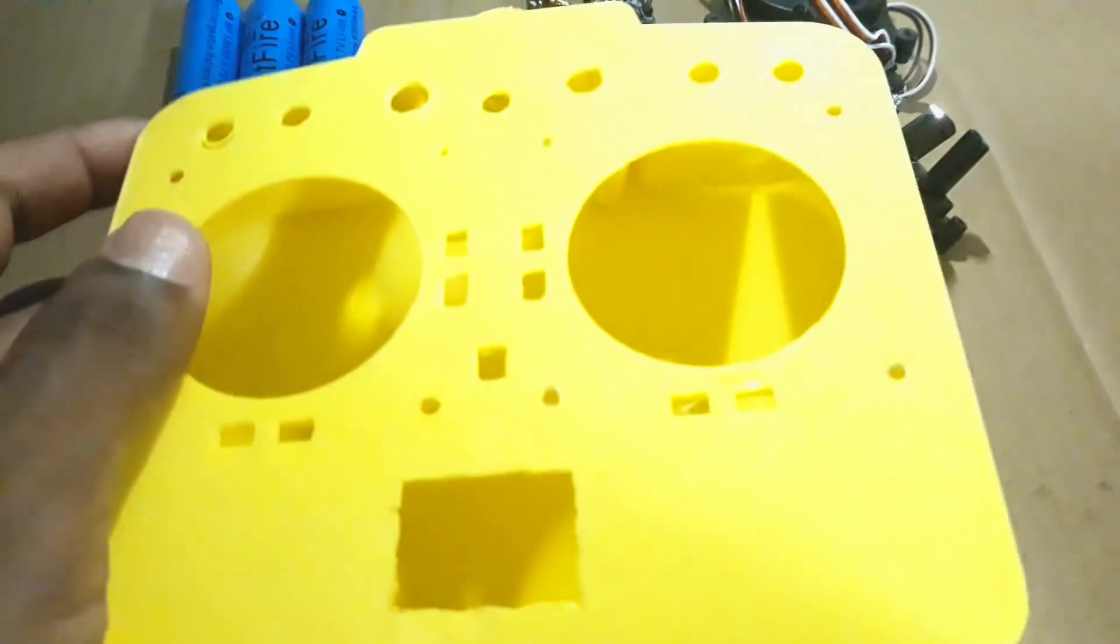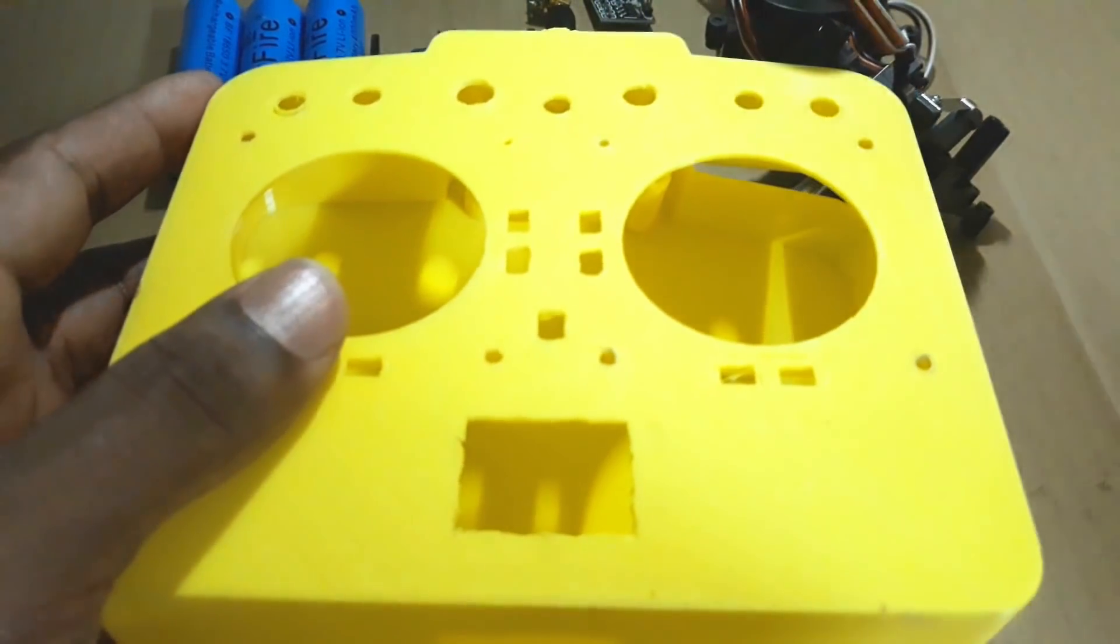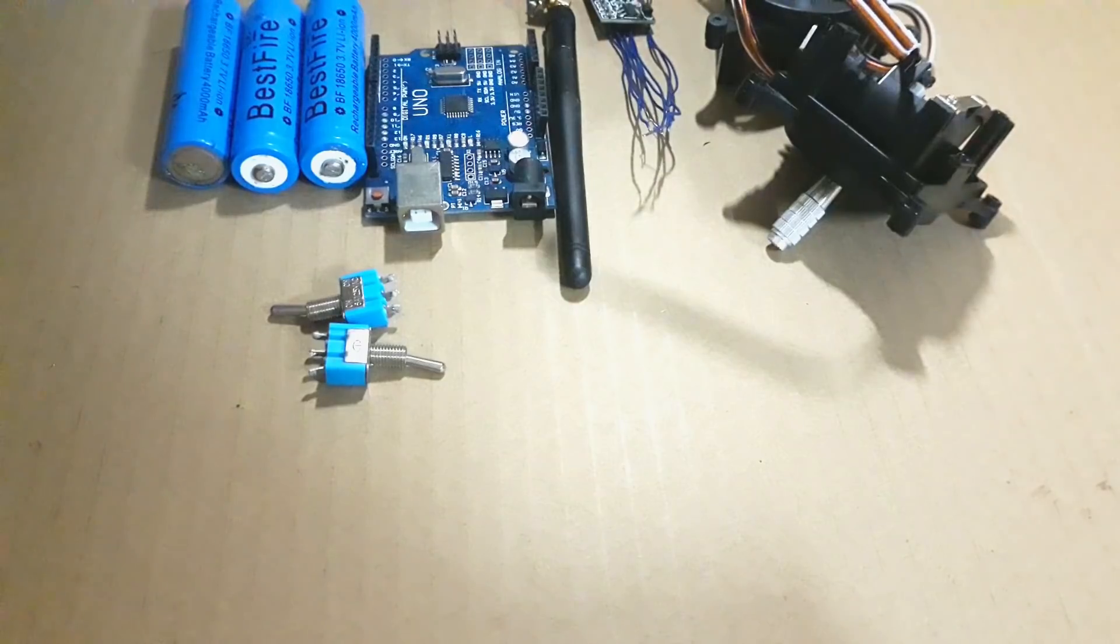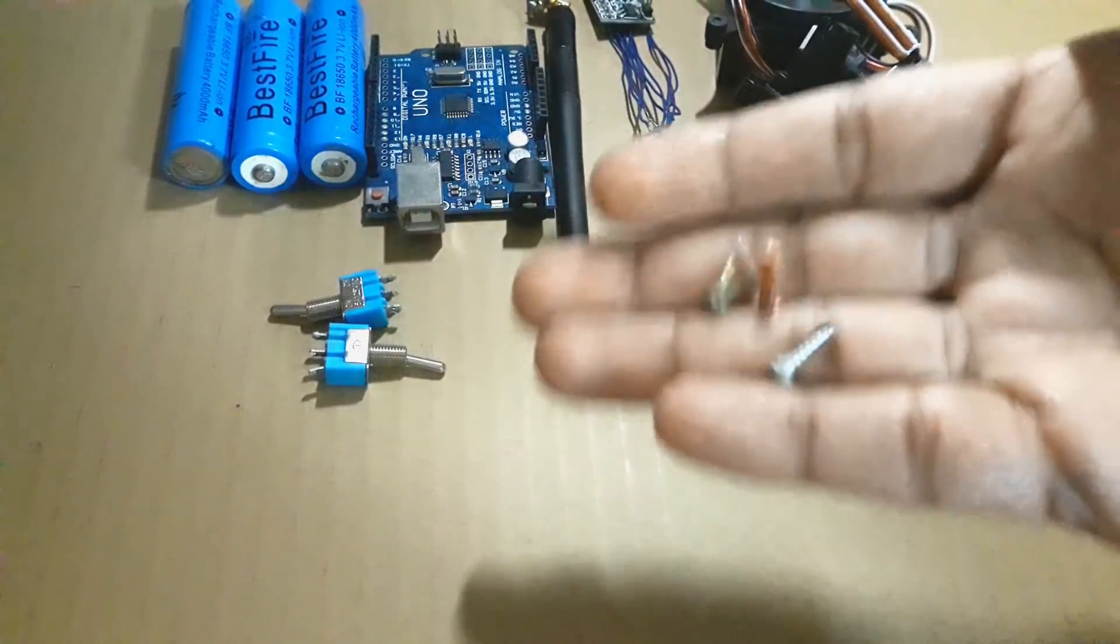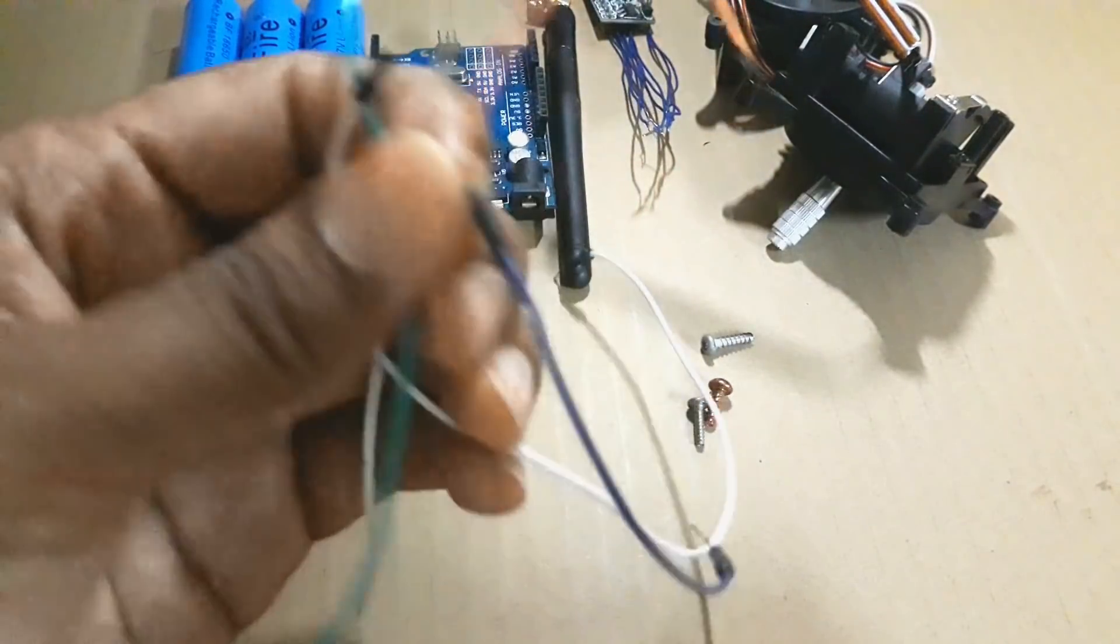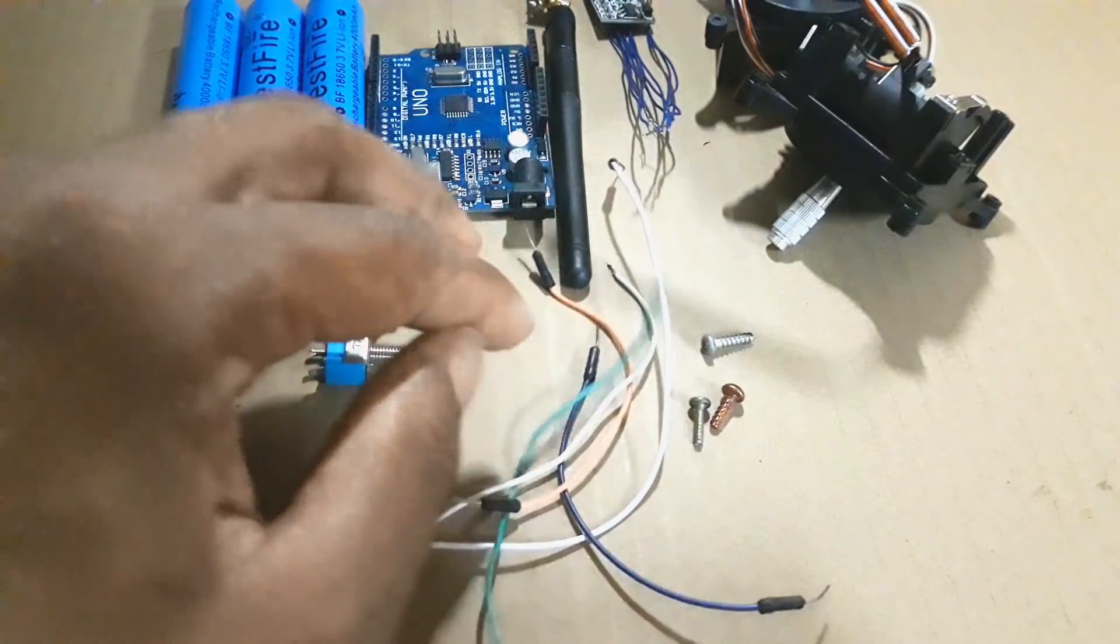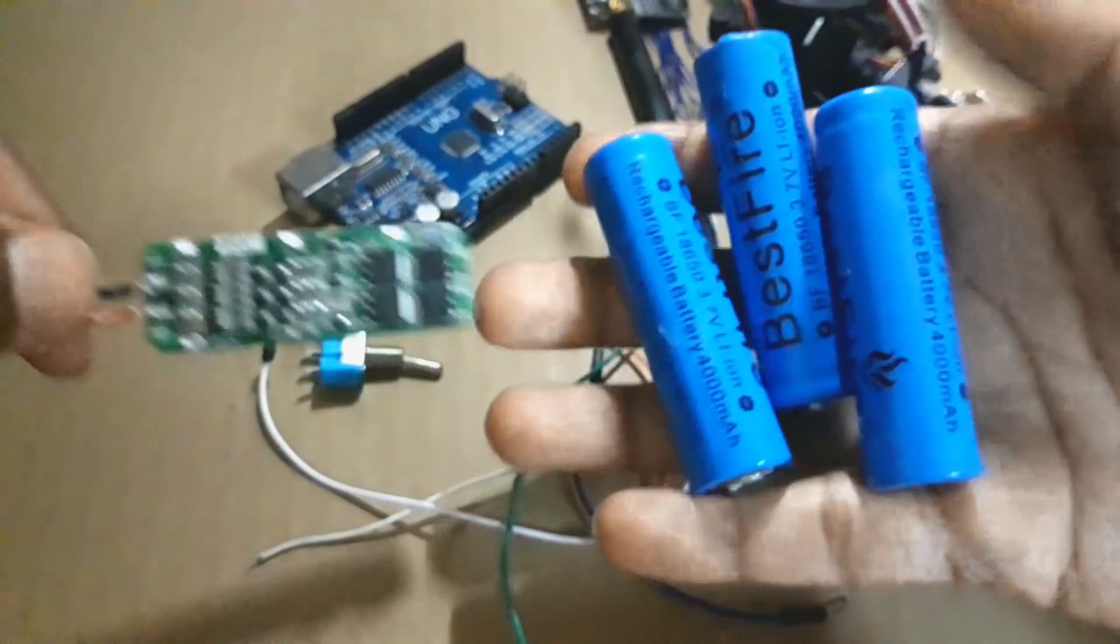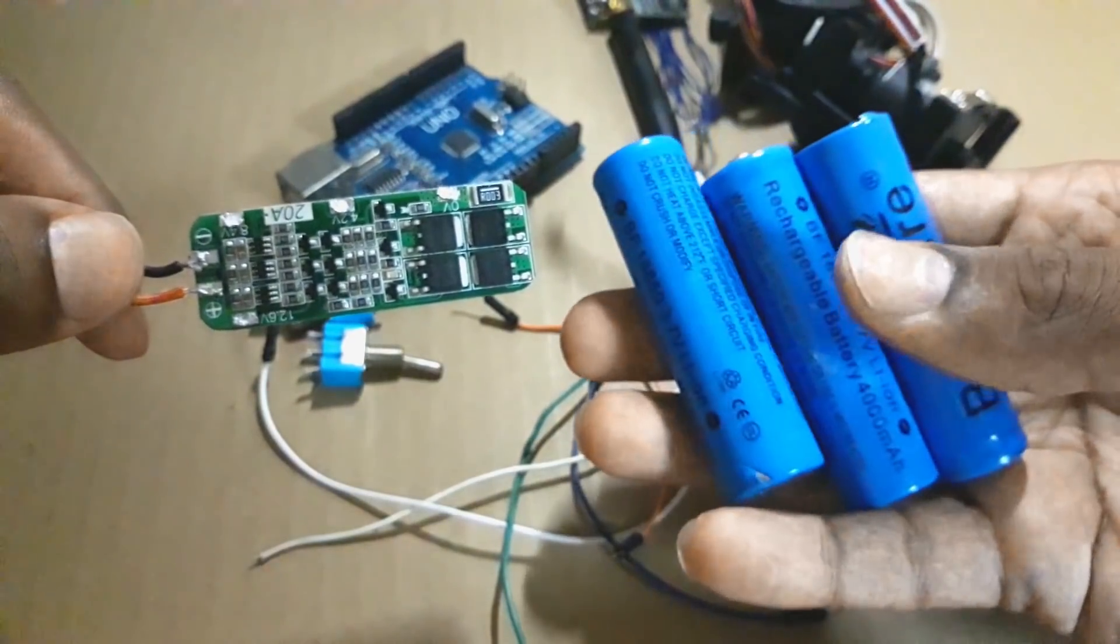This is my 3D printed body for the transmitter. I will be providing the STL files for it in my website. You will also need some screws and some wires, and you will also need a BMS to charge the battery. I will show you how to do it.